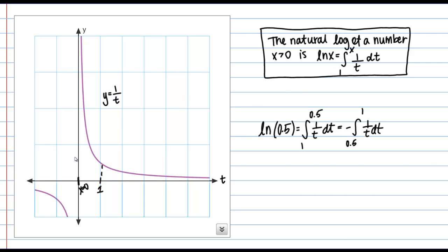Then theoretically, the natural log of 0 would be the area bounded by this curve between x equals 0 and x equals 1. But if I try to shade in that area, what's going to happen?